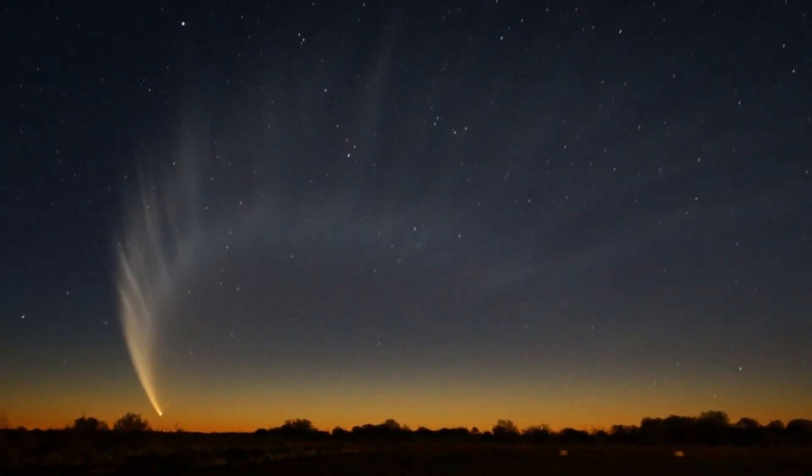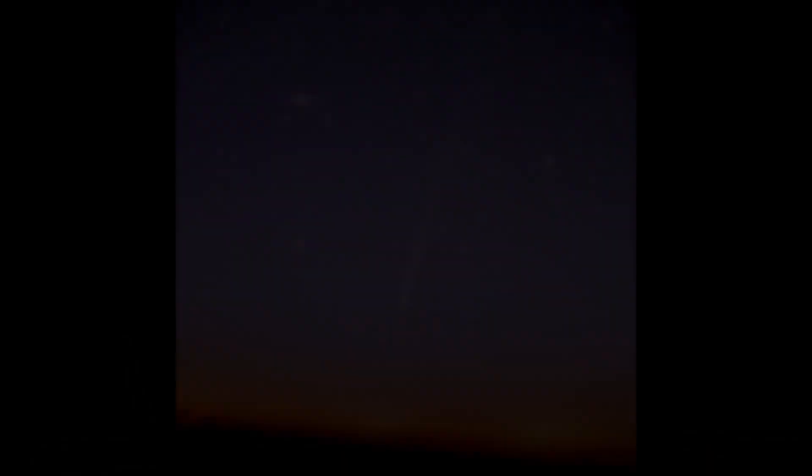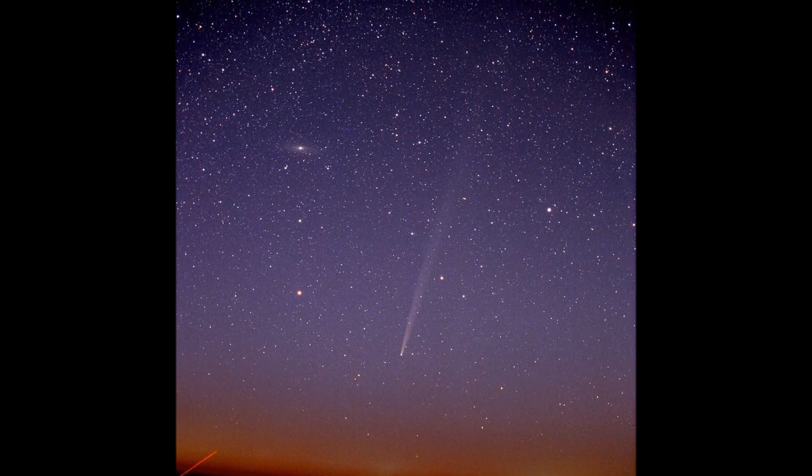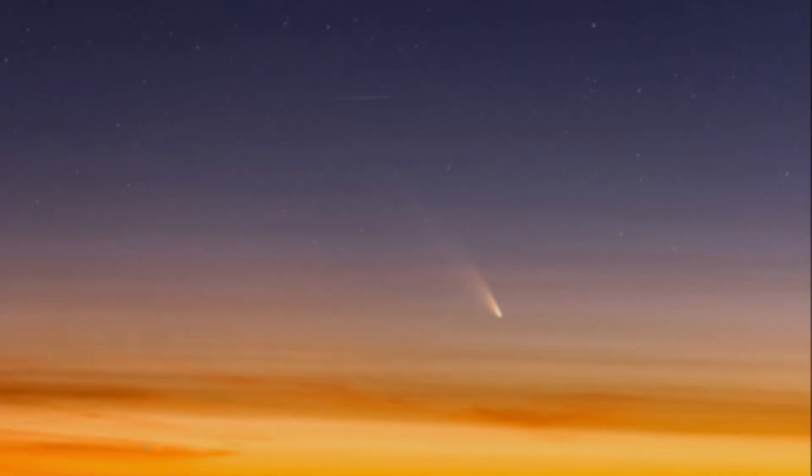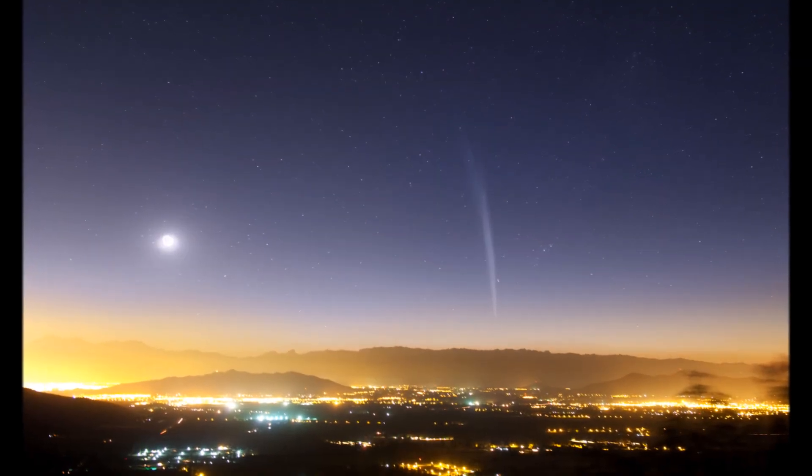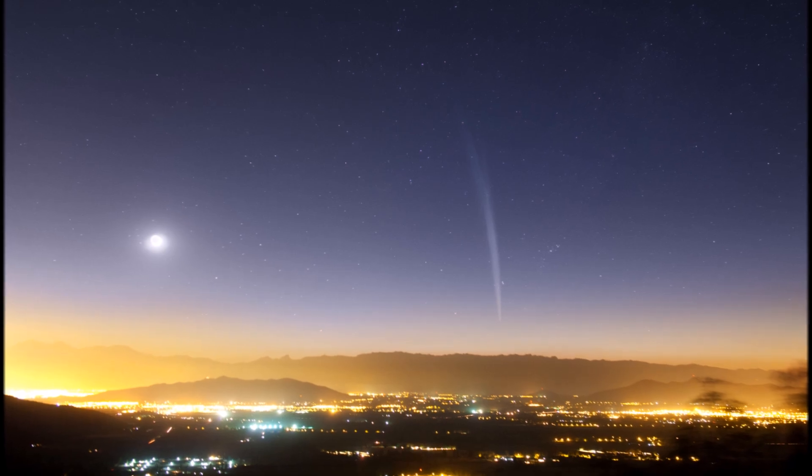In the meantime, comets that are visible to the naked eye pass close enough to see from Earth roughly once a year, although not many of them are bright enough that they are easy to see. If you see something that looks like a fuzzy star with a trailing tail that is visible for a few nights in a row, you're probably looking at a comet.